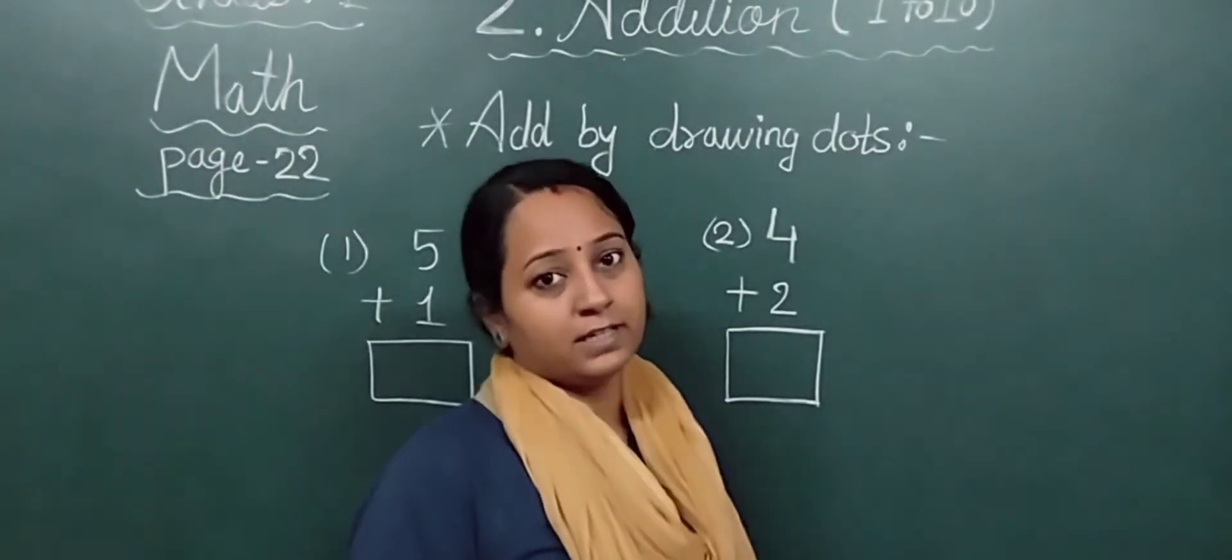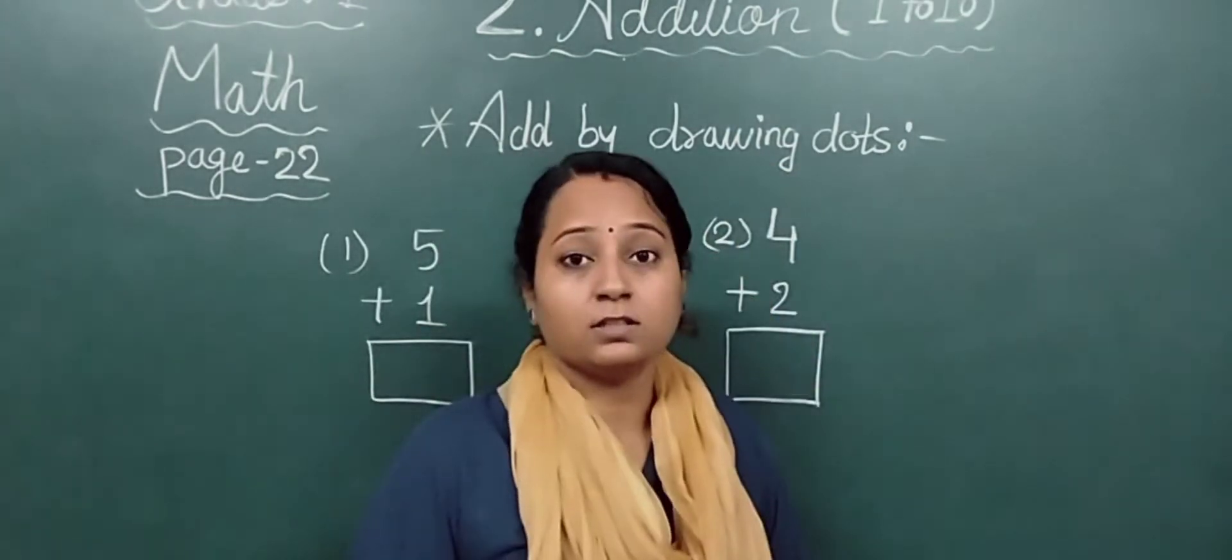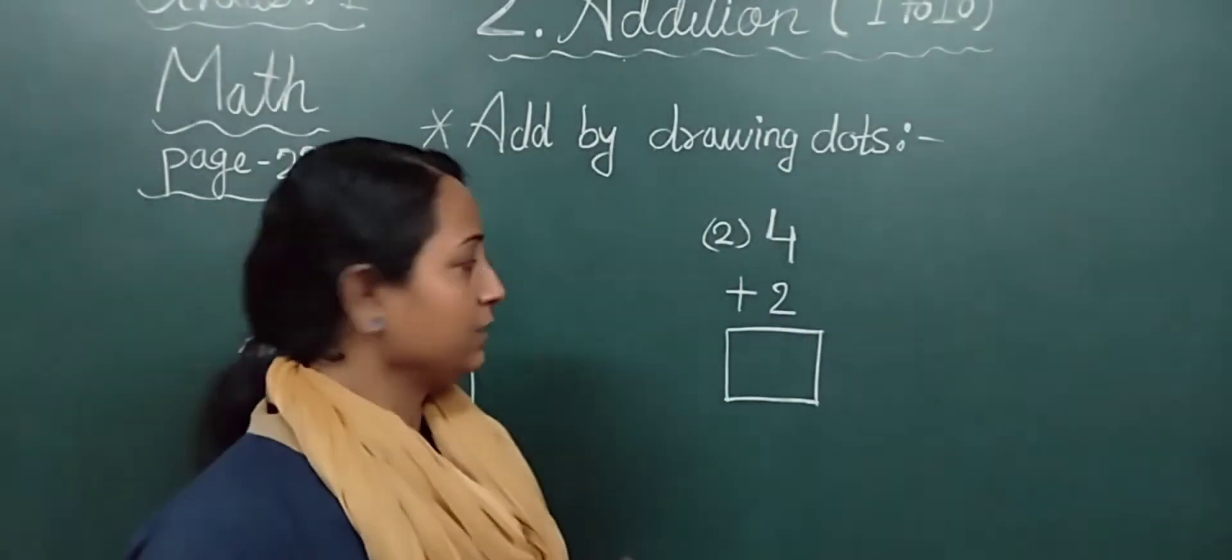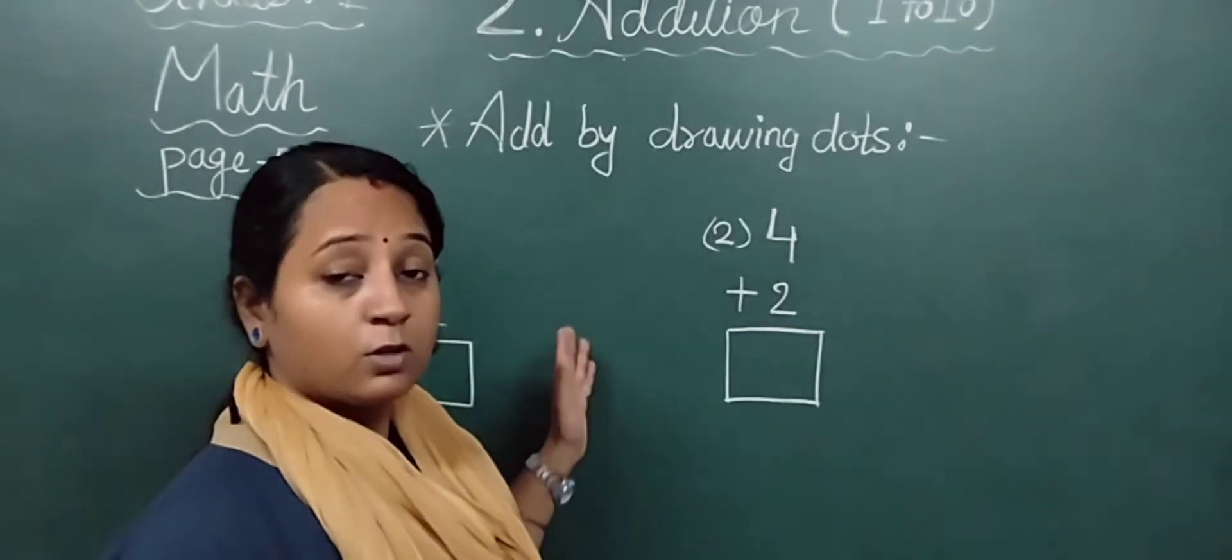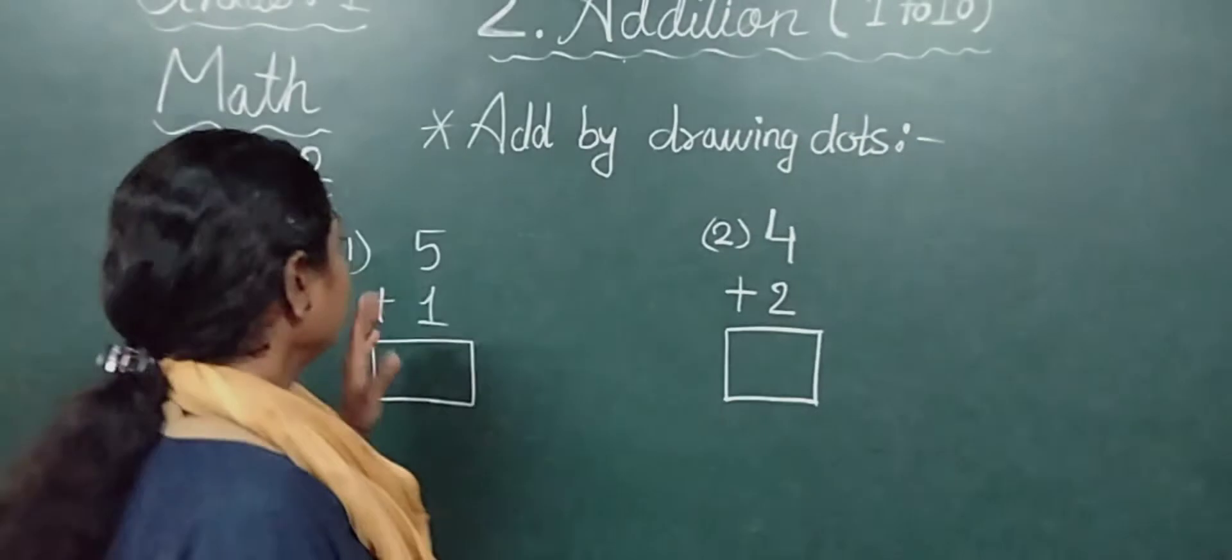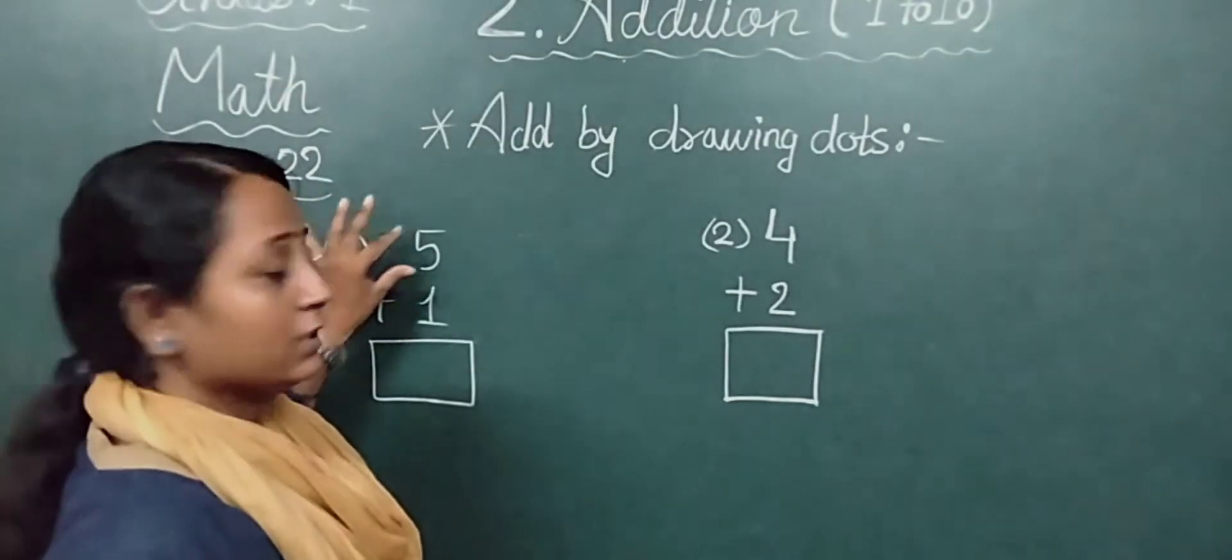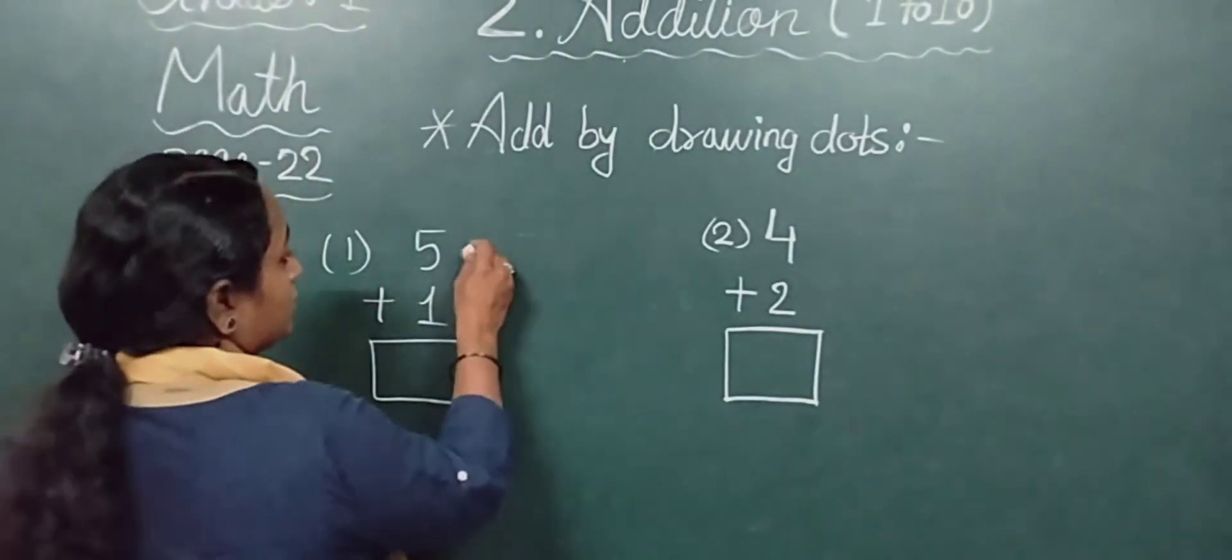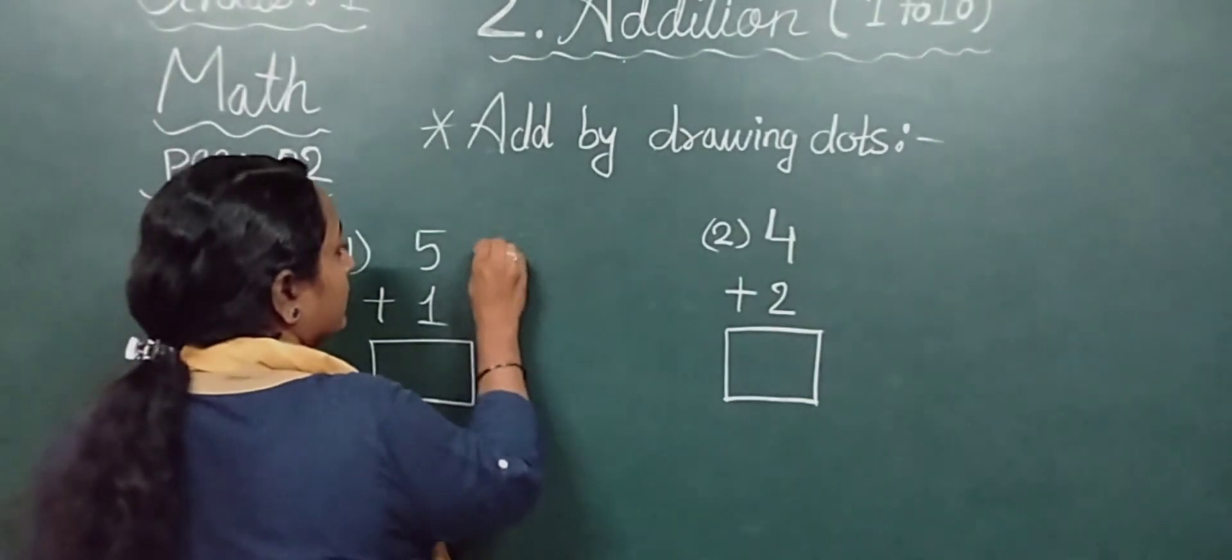We will do another exercise. Here, add by drawing dots. You have to add by making dots. We will make dots first, then we will add. So here see the number 5. The first number below is 1. We will make dots here. Since it's written 5, we will make 5 dots: 1, 2, 3, 4, 5.